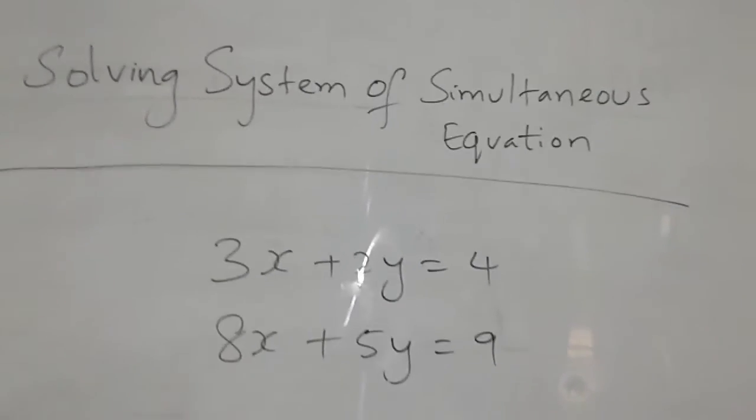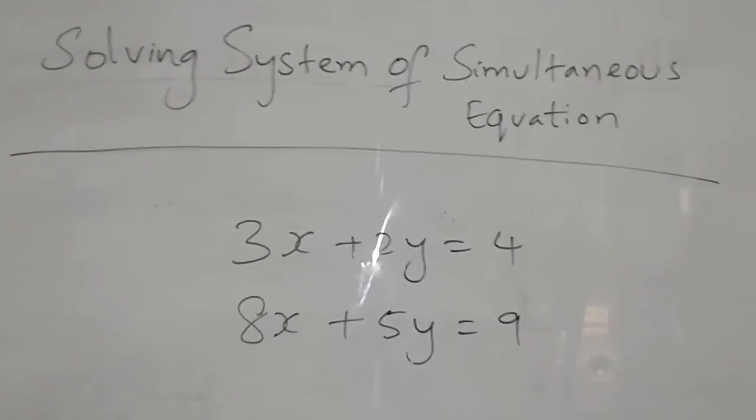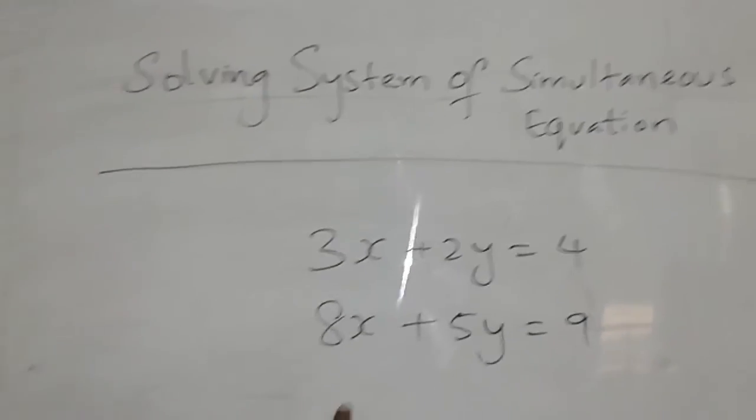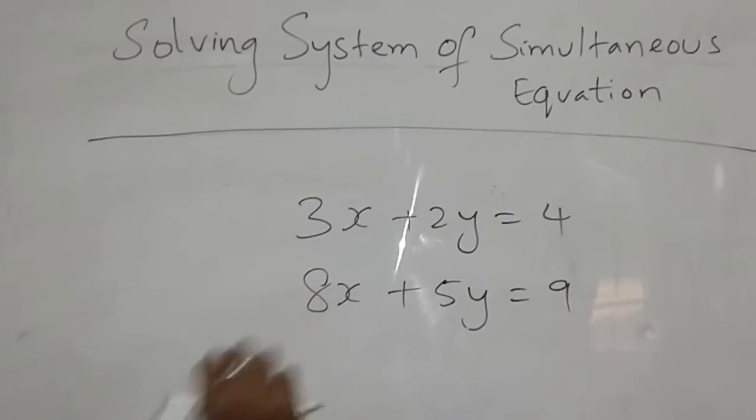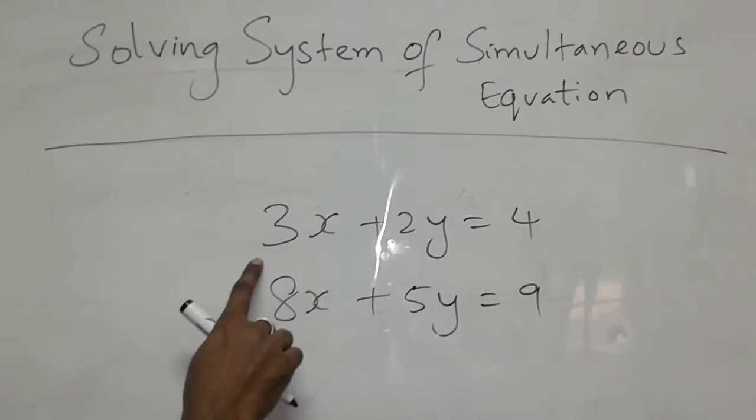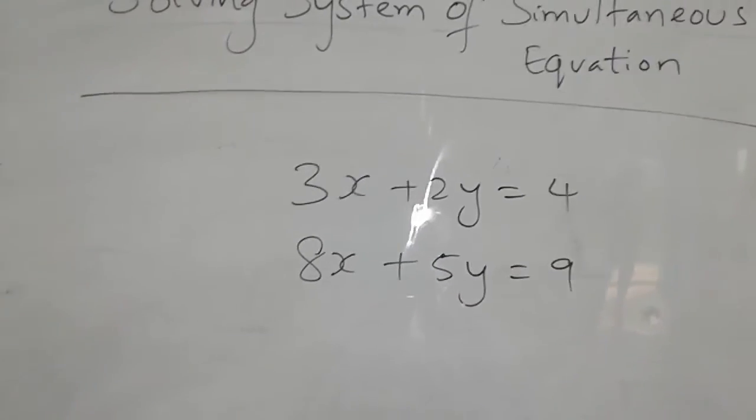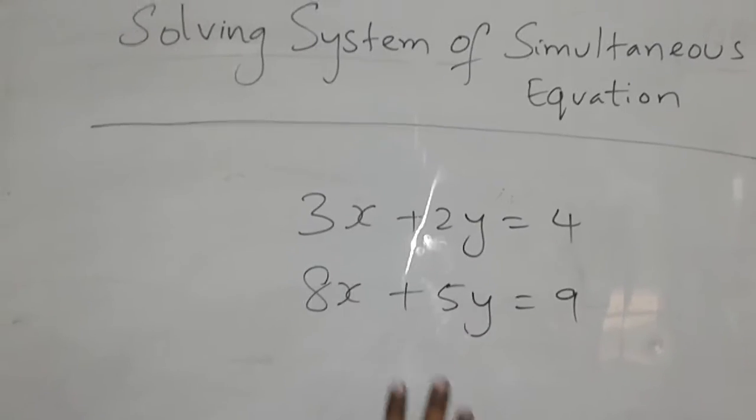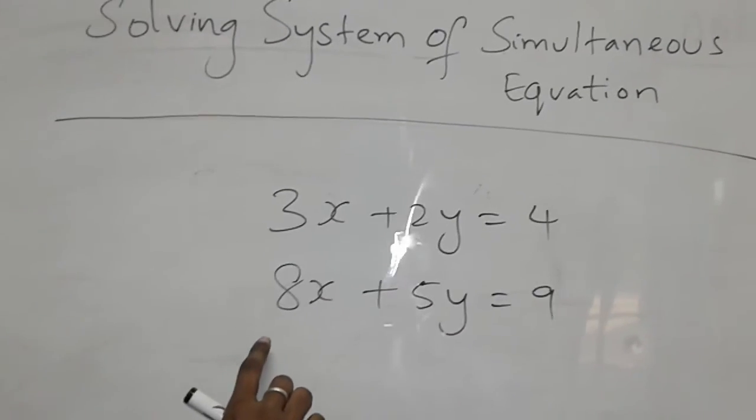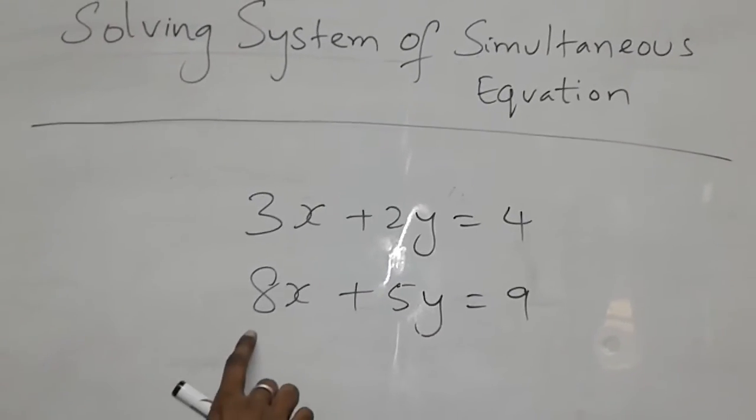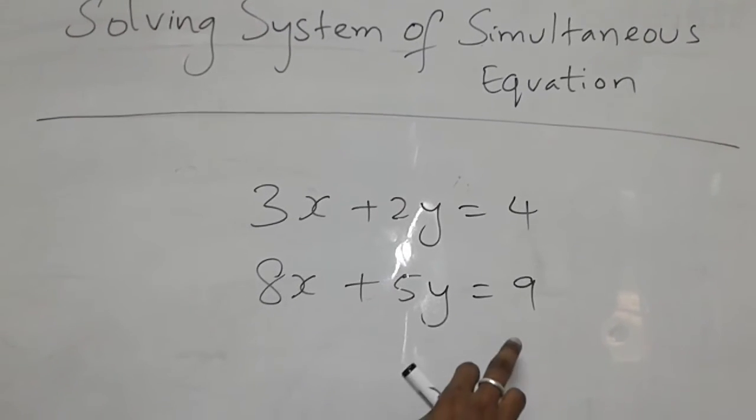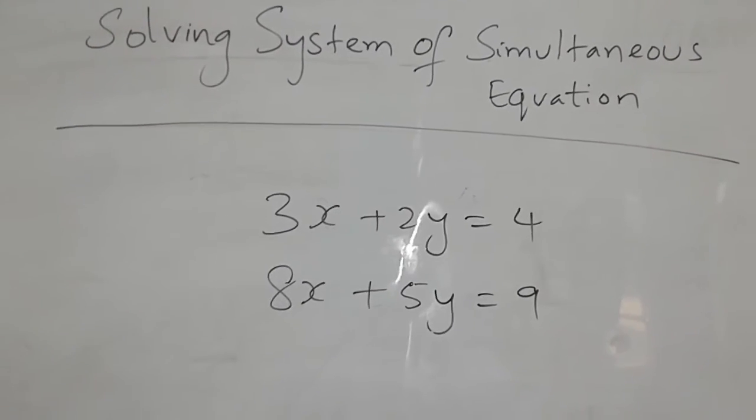Hi everyone, in this video we are going to solve a system of simultaneous equations. For that we need x and y for both equations. As you know, we have x coefficient, y coefficient, and a constant number. First, you need to check that your equation is arranged properly, and in the second one also it should be in the proper manner.